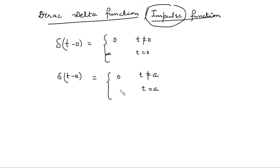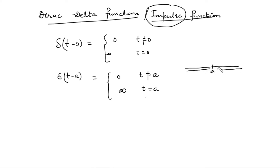Discontinuity occurs at a, and this is not a piecewise discontinuity — here the discontinuity is an infinite discontinuity. So the function is defined like this: before a the value of the function is zero, after a the value of the function is zero, but at a it fluctuates and the magnitude is very very large, going to infinity. This is the Dirac delta function at zero and at a.